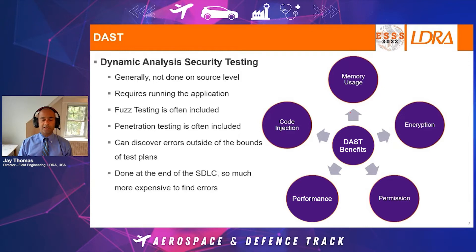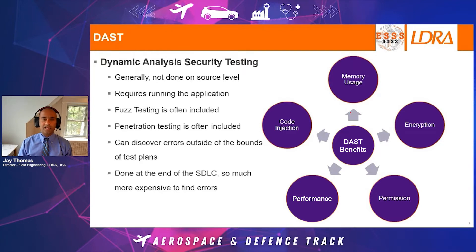Dynamic analysis in security testing is actually a little different from what we've seen as dynamic analysis in the certification space. Generally, it is not done on the source level — it is done on the application level. It has a number of elements, some of which we are familiar with and some of which are not as common in the aviation and avionics space. For instance, fuzz testing is very similar to what we see in boundary testing. In the DAST space, it is usually done at the binary level, but doing it at the source level is also very valuable when you have the source code. Other elements include penetration testing, memory usage detection, and auditing of permissions.